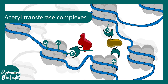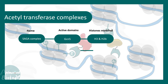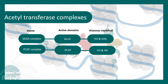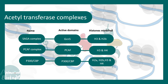There are many acetyltransferase complexes. Some of the most common are the SAGA complex, which has GCN5 as its active domain and modifies H3 and H2B histones. There are also PCAF complexes, P300, and CBP complexes, each acting on different histone residues. Each of these complexes has its own preferable histones which they modify.